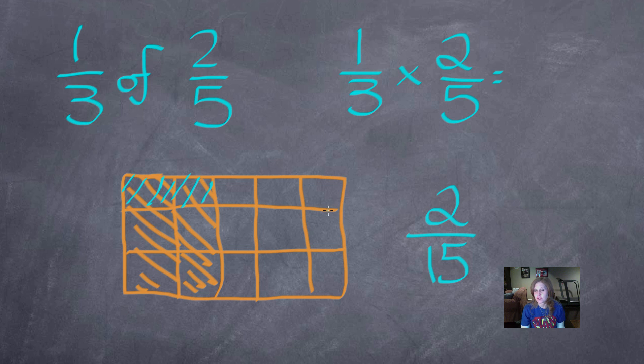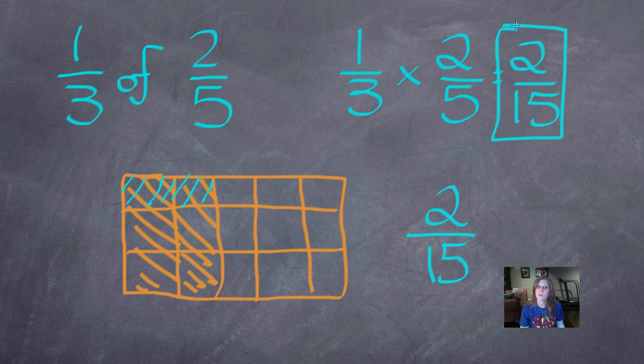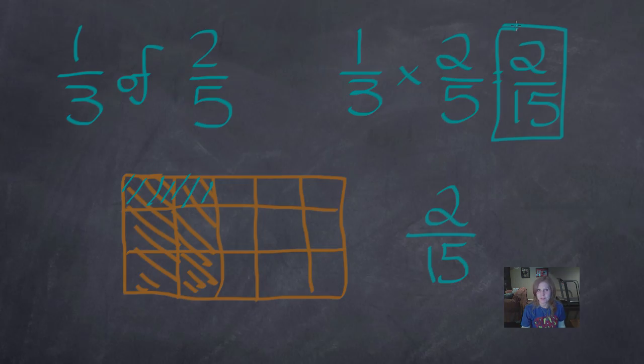Now let's use the standard algorithm to check that. I multiply my numerators. One times two is two. And three times five is fifteen for my denominators. I can't simplify that. There's no number that will divide into both two and fifteen, so I know that I've completed my problem. One-third of two-fifths is two-fifteenths.